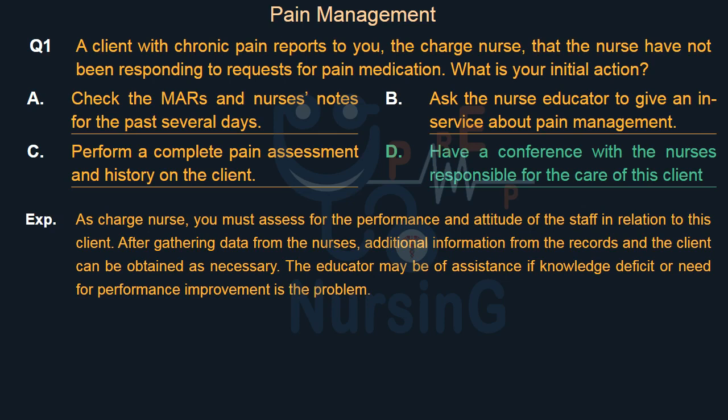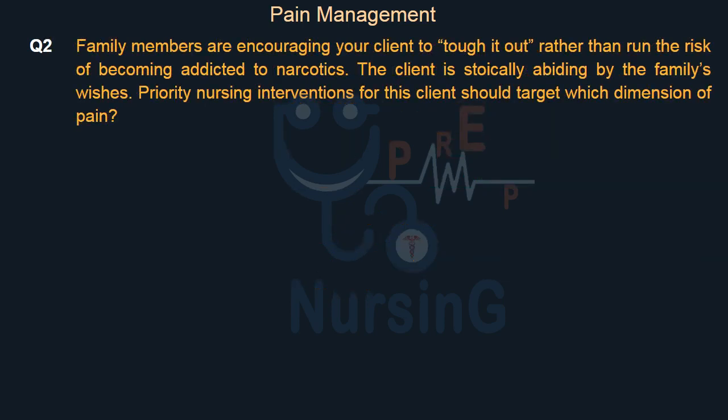The educator may be of assistance if knowledge deficit or need for performance improvement is the problem. Family members are encouraging your client to tough it out rather than run the risk of becoming addicted to narcotics. The client is stoically abiding by the family's wishes. Priority nursing interventions for this client should target which dimension of pain?